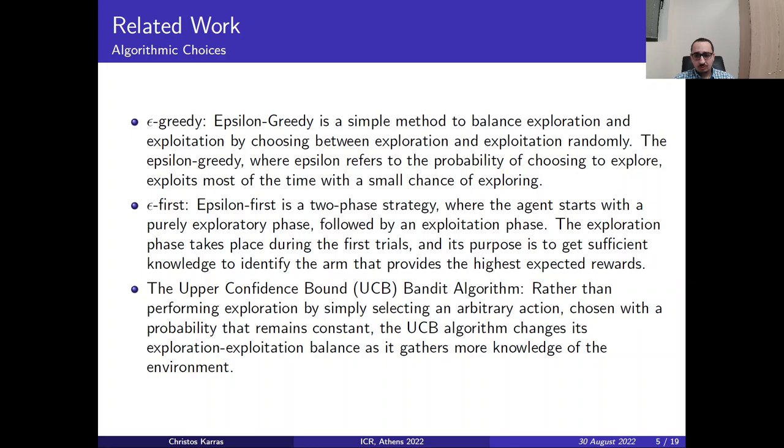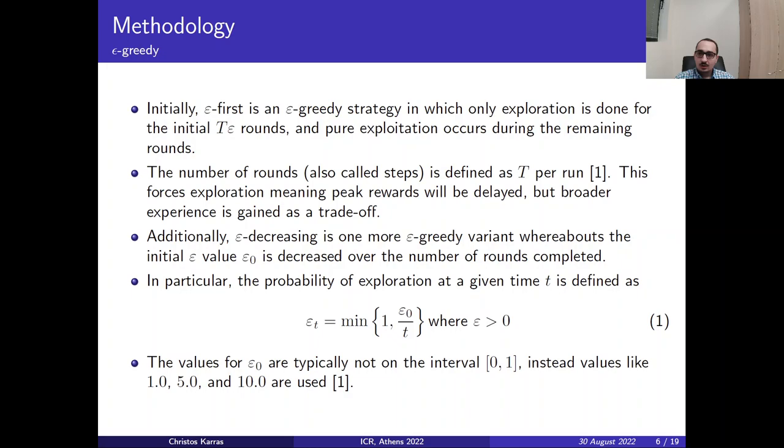The exploration phase takes place during the first trials and the purpose is to get sufficient knowledge in order to identify the arm that provides the highest expected rewards. And then we have the upper confidence bound or UCB algorithm. This algorithm rather than performing the exploration by selecting an arbitrary action chosen with probability that remains constant, which is a value of c in the algorithm, it changes the exploration-exploitation balance while it gathers more knowledge of the environment.